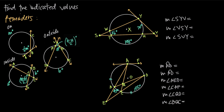In this video, we're talking about how to find the degree measures of arcs or angles formed when we have two or more intersecting lines around a circle. We can break this down into three scenarios: where the point of intersection is on the edge of the circle, where it's inside the circle, or where it's outside the circle.